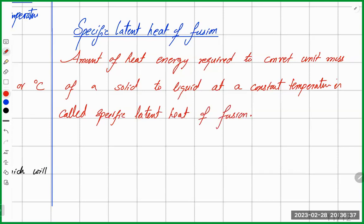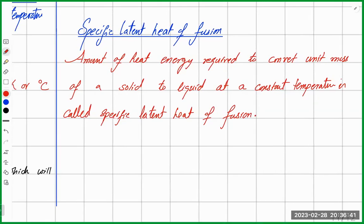The amount of heat required to change state without changing temperature is called latent heat. The formula for specific latent heat of fusion is: Lf equals heat energy divided by the mass that is converted.